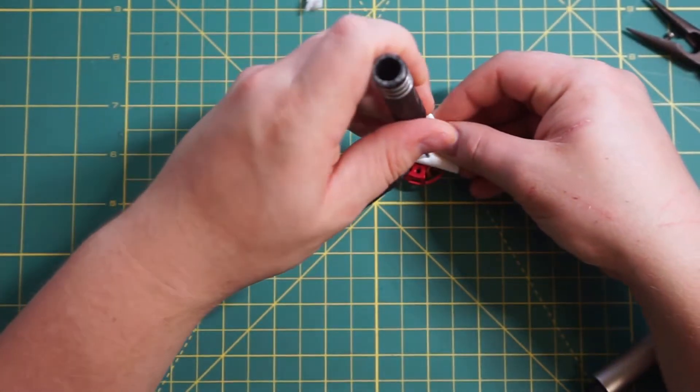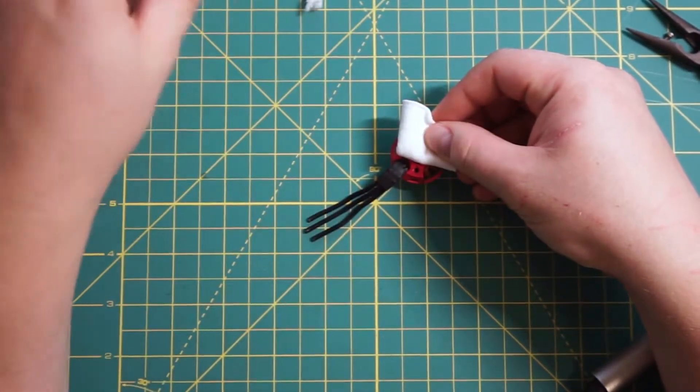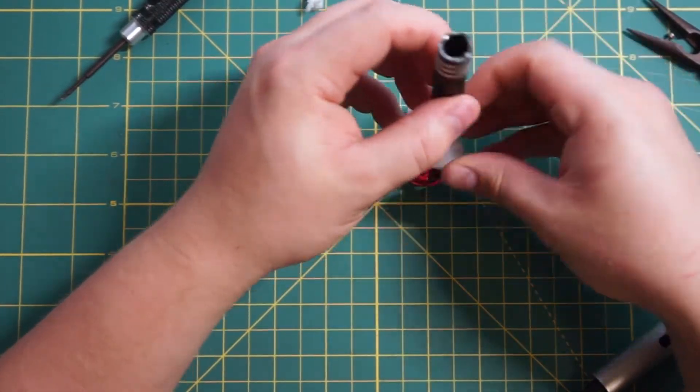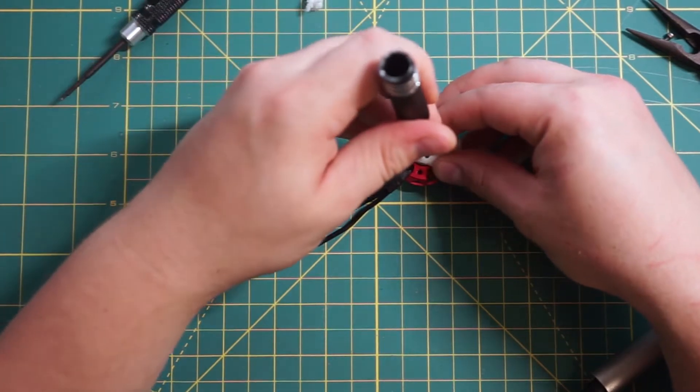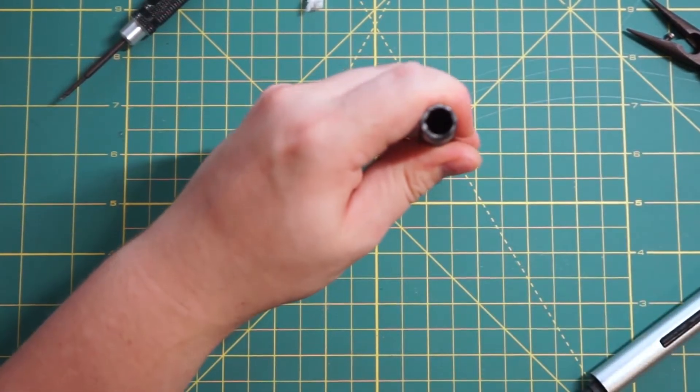After that, just take a small piece of cotton and a little bit bigger screwdriver, like 2.5, and just tap it from all the sides.